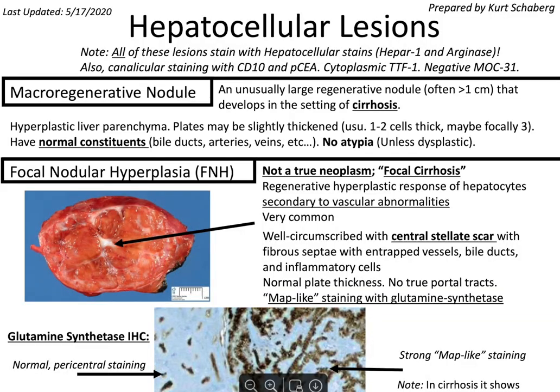Without further ado, let's talk about hepatocellular lesions. All of these lesions stain with hepatocellular stains including HepAR1 and arginase. There is canalicular staining with CD10 and PCEA, as well as cytoplasmic TTF1. Of note, negative for MOC-31 — that's very important in differentiating biliary lesions, which we will talk about shortly after.